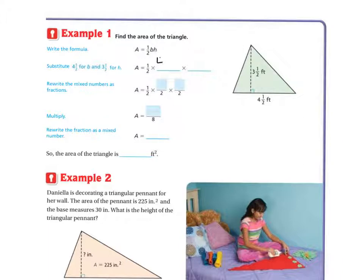So let's do that. So my base is 4 and 1 half, and my height is 3 and 1 half. So we're going to rewrite them as mixed numbers. Remember the way we do that? So I'm going to take this 4 and 1 half. I'm going to rewrite it as a mixed number.